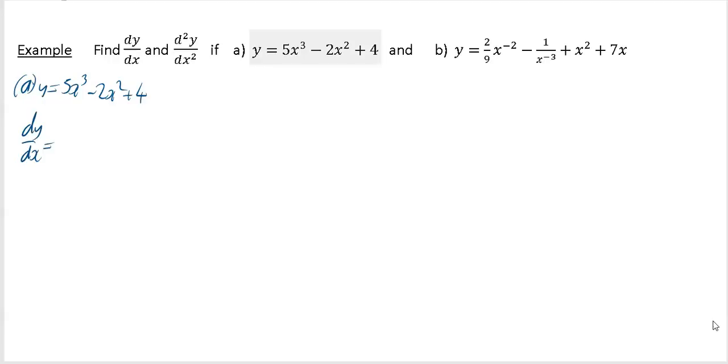Multiply by the power and reduce the power by 1 to give 15x² - 4x. The 4 is just a constant, so it differentiates to 0.